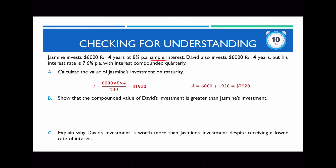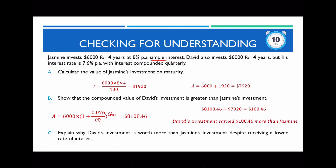For part (b), to show that David's compounded investment is greater than Jasmine's, I calculate his final amount using the compound interest formula. After four years his balance is $8,108.46. Subtracting Jasmine's balance, David has earned $188.46 more than Jasmine.